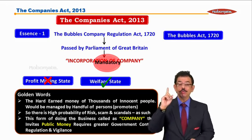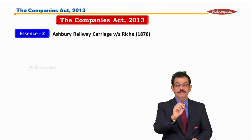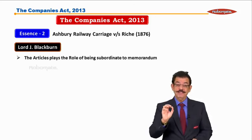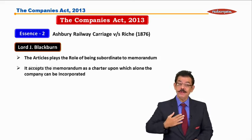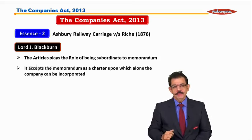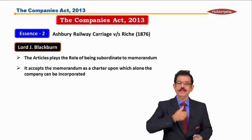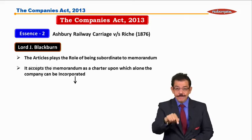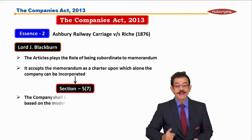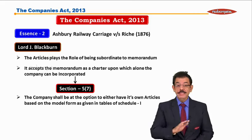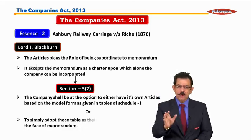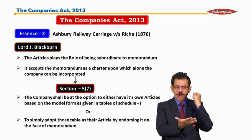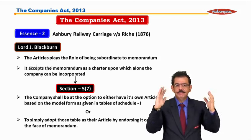Toh ek Bubbles Act se humne acquaint karaya. Aur doosra essence: Ashbury Railway Carriage versus Richie — 1876 ka case hai. Is case mein Lord Blackburn, jo judge the, unhone kaha: articles place the role of being subordinate to memorandum, and articles accepts the memorandum as a charter upon which alone the company shall be incorporated. Yani articles ki zaroorat nahi — memorandum mein itna dam hai ki woh akela ek company ko incorporate kar sakta hai. Ab jo 1876 mein kaha gaya, woh humare aaj ke Companies Act ke sections mein dikh raha hai — section 5 subsection 7 mein dikhayi de raha hai, jo clearly bol raha hai: the company shall be at the option either to have its own articles based on the model form as given in Schedule 1, or to simply adopt those model forms as the articles by endorsing on the face of the memorandum.